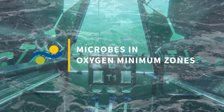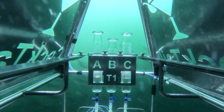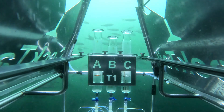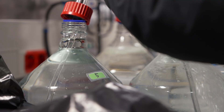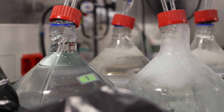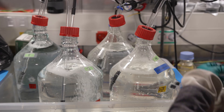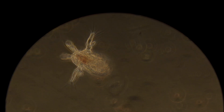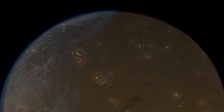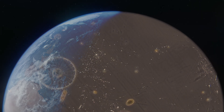Microbes basically run our planet and even though we normally can't see them, they're essential for all life on earth. Microbes can basically harvest any chemical reaction that provides energy, making them the greatest chemists on earth. They also engineer our planet and make it what it is today, and we still have to learn a lot about how they do it and why they do it.